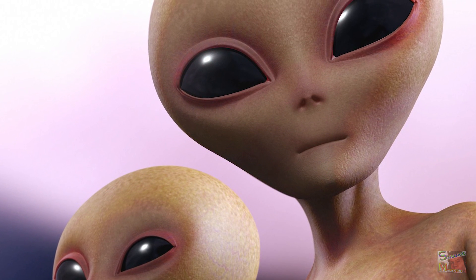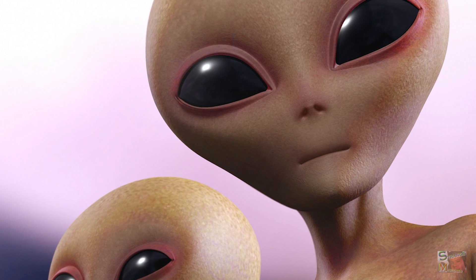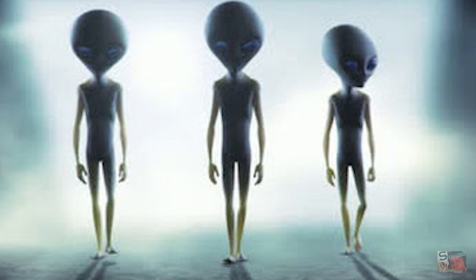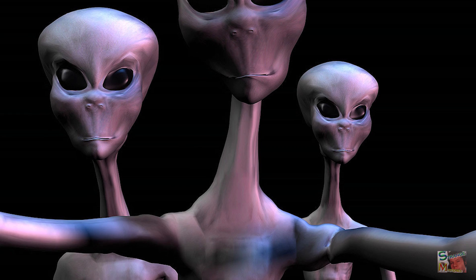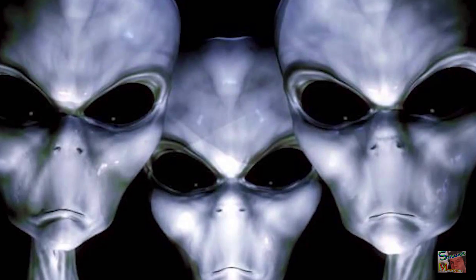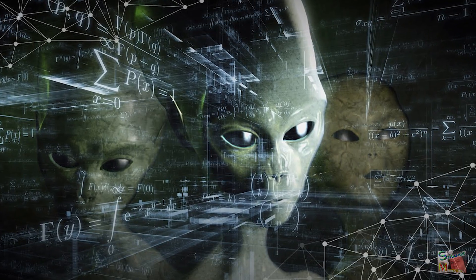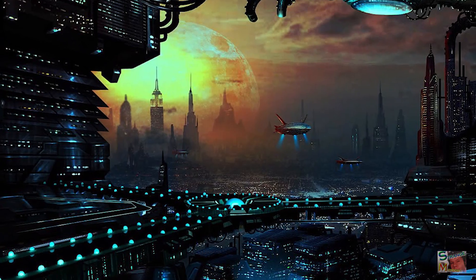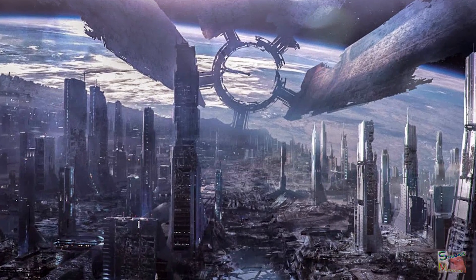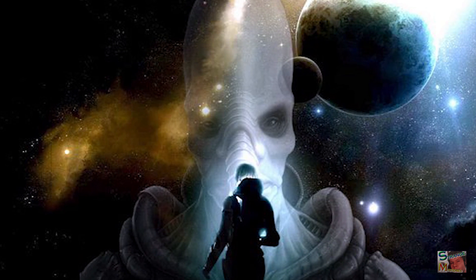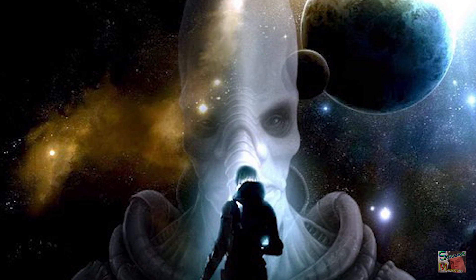If we were to meet an extraterrestrial civilization, the chances of them being the same age as humanity are slim to none. If they're much younger than us, it might be difficult or impossible to communicate with them. But if they're older, say a billion years more advanced than us, then what might they be like? How would they look, what technology would they have, and what would they be capable of? Let's find out as we ask what would a civilization 1 billion years older than us be like.